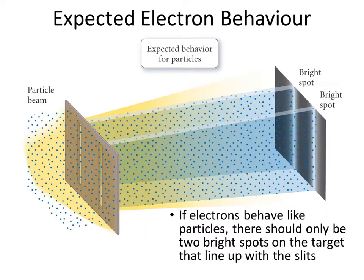De Broglie said, well if light can behave as both a wave and a particle, can't all matter behave as a wave and a particle? A similar experiment was set up as we saw with light — light was passed through double slits, and what was expected was two bright spots, but we ended up getting an interference pattern.